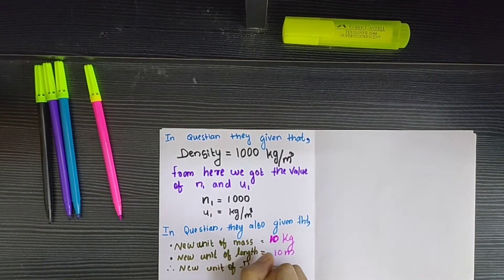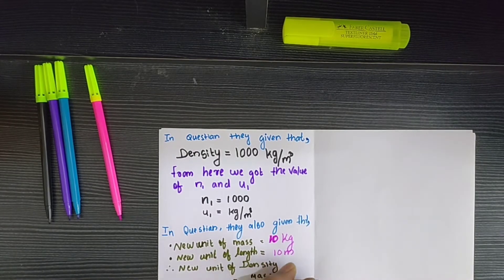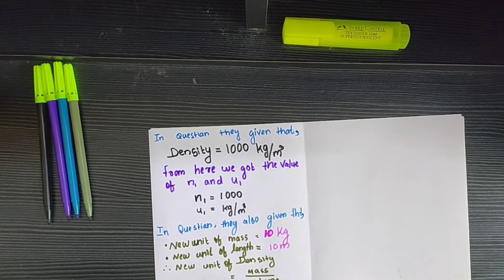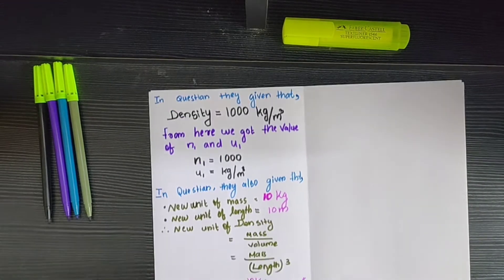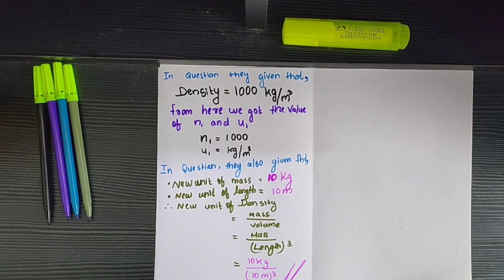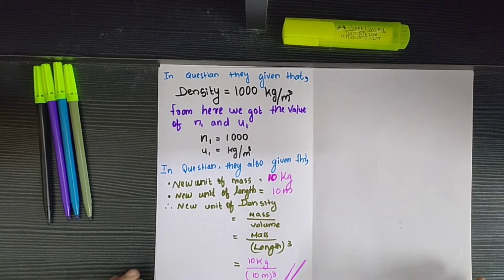Therefore, the new unit of density is equal to mass divided by volume, that is equal to mass divided by length cubed. So when we substitute those values of the new unit of mass and length, we get the answer: 10 kg divided by (10 m)³ as the new unit of density.